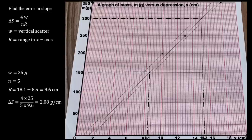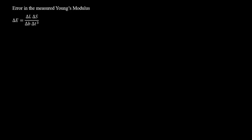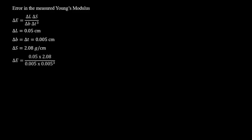We infuse the error in slope along with the errors in length, breadth, and thickness into the equation for the error in Young's modulus: ΔE = ΔL × ΔS / (ΔB × ΔT³). With ΔL = 0.05 cm, ΔB = ΔT = 0.005 cm, and ΔS = 2.08 g/cm, we get ΔE = 1.664 × 10⁸ g/s²cm³. Converting to standard units by multiplying by 10³, the error in Young's modulus is 1.664 × 10¹¹ kilograms per second squared per meter cubed.